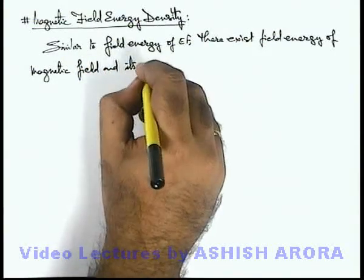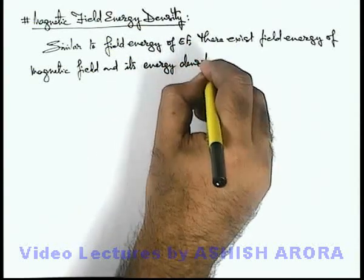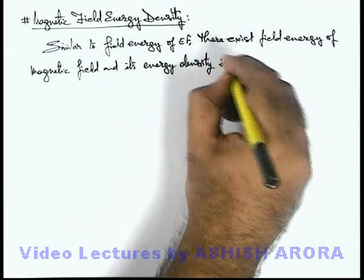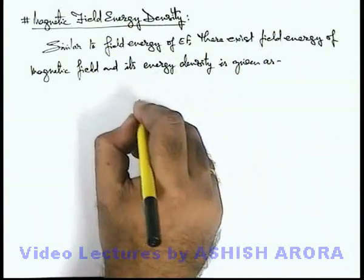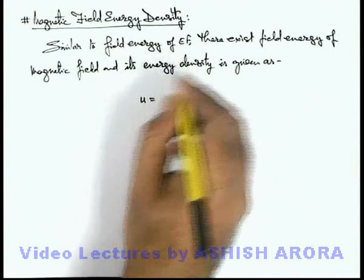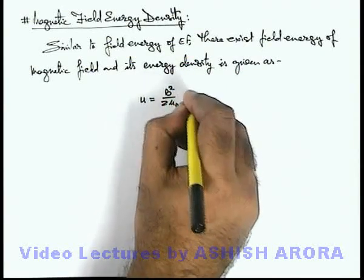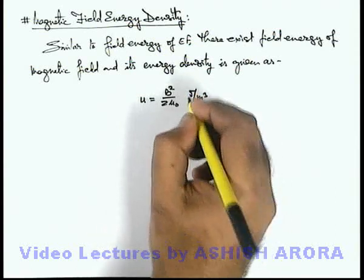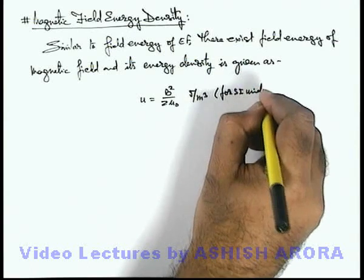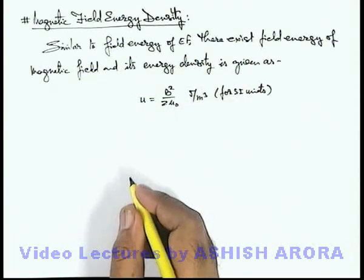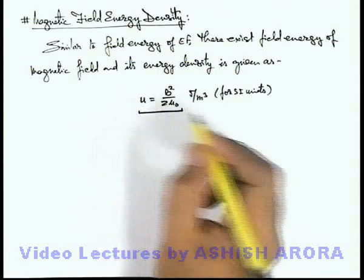And its energy density is given as... you can directly keep this expression in your mind. The energy density of field energy of magnetic field is B squared by 2μ₀. It is written in joules per meter cube for SI units of magnetic induction and permeability. This is the expression for field energy density of magnetic field.